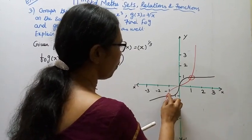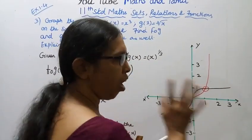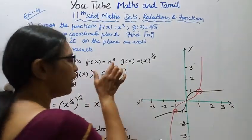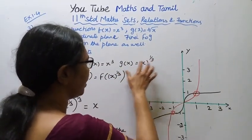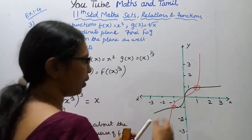Point one comma one, then minus one comma minus one. These are common points for graphing f(x) = x³ and g(x) = x^(1/3). First sum, second sum on the graph.